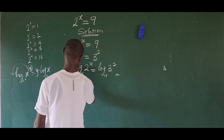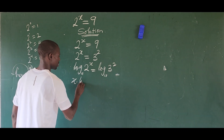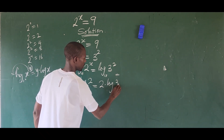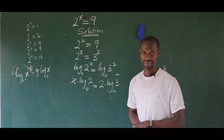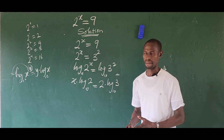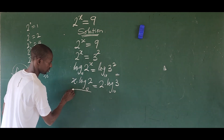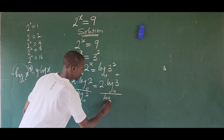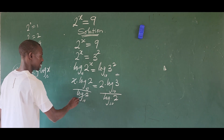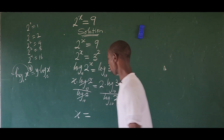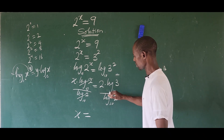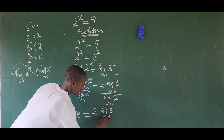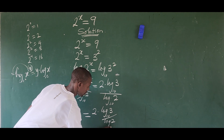We move the exponents out front: x times log base 10 of 2 equals 2 times log base 10 of 3. We are looking for x, so we divide both sides by log base 10 of 2. This leaves x equal to 2 times log base 10 of 3, all over log base 10 of 2.